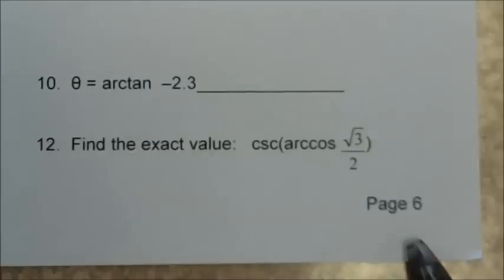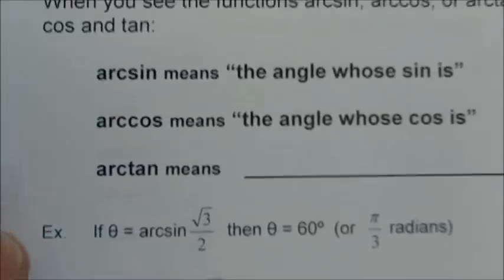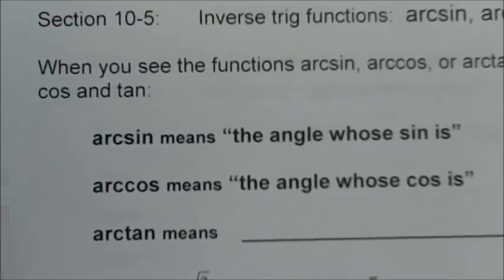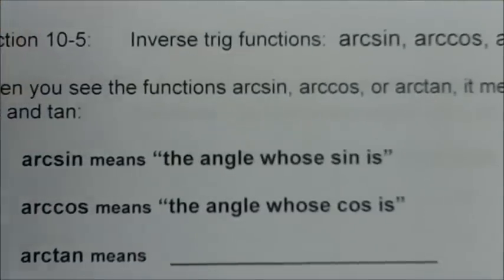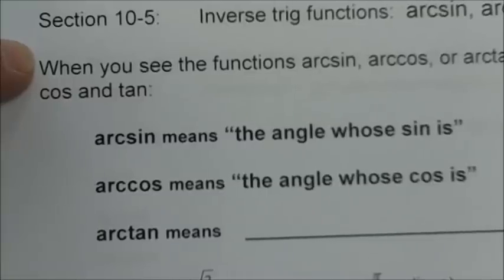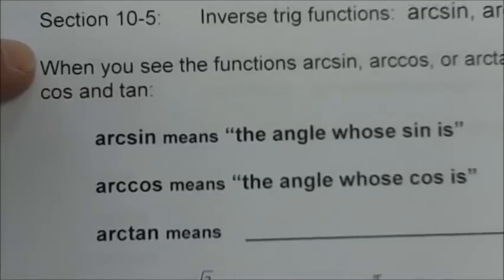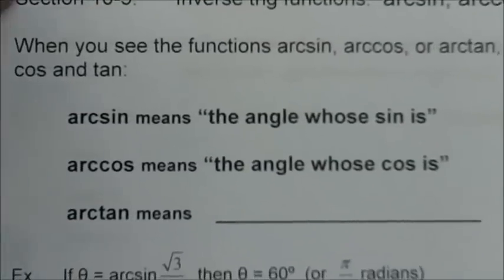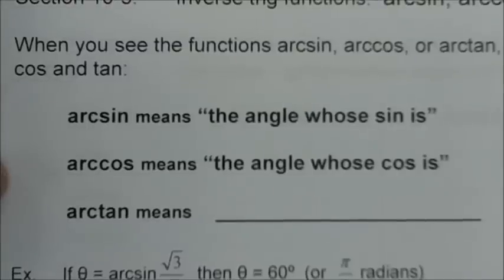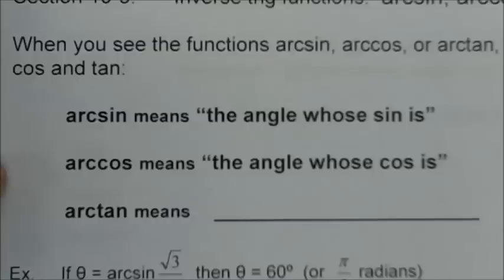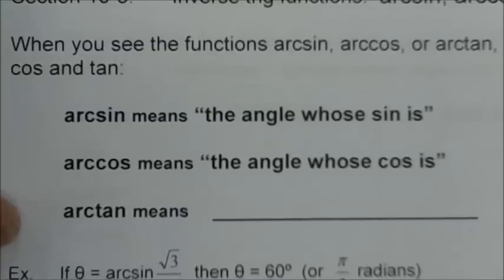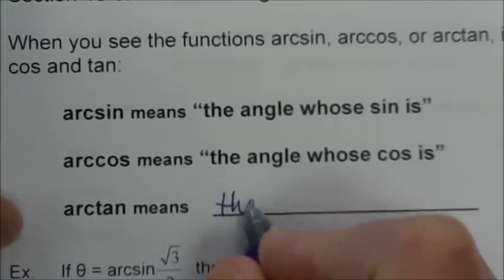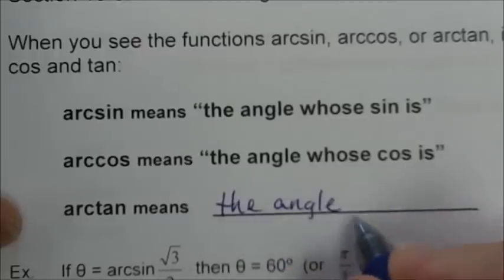Today we're on page 6 of our chapter 10 notes packet, section 10-5, Inverse Trig Functions. We have arc sine, arc cosine, and arc tangent. When you see these functions, it means the inverse of sine, the inverse of cosine, and the inverse of tangent. Arc sine means the angle whose sine is. Arc cosine means the angle whose cosine is. Arc tangent means the angle whose tangent is.